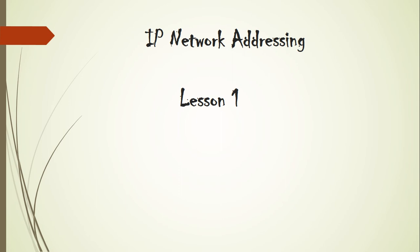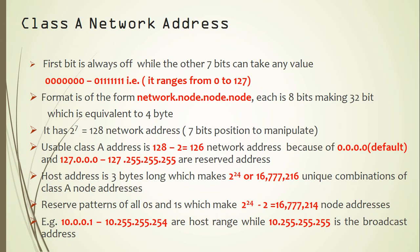Welcome to IP network address, lesson one. In this tutorial I'm going to describe the types of network addresses and how to identify them, their capacity, the node's capacity, the node address capacity, and how to identify the network path and the node path. There are different types of network addresses: class A, B, C, D, and E. The most important in this course are class A, B, and class C, because we are going to use these three addresses in the next tutorial on IP subnetting.